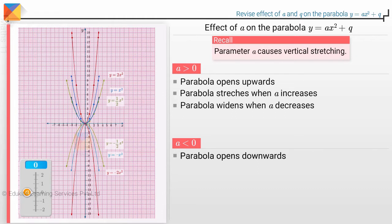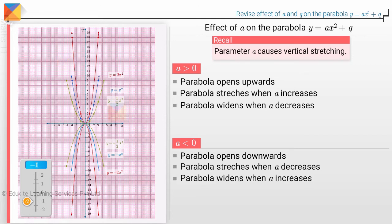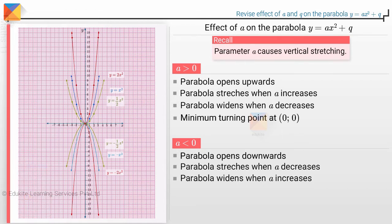If A is negative, the behavior is reversed. As A decreases from minus 1 to minus 2, the graph is vertically stretched. And when it is increased from minus 1 to minus 1/2, the graph becomes wider.